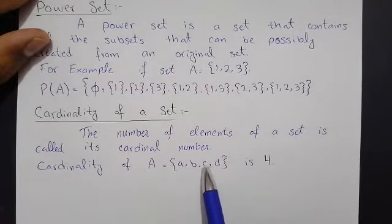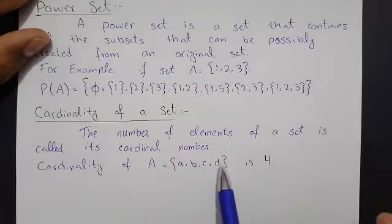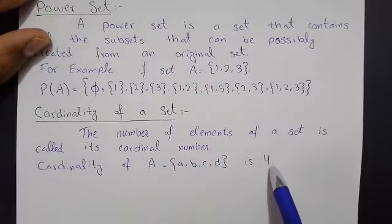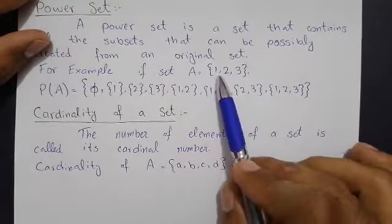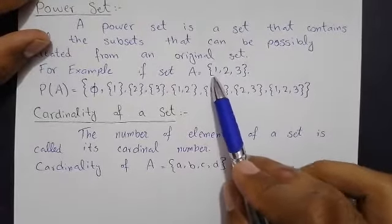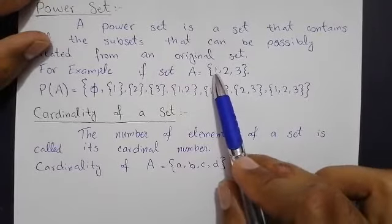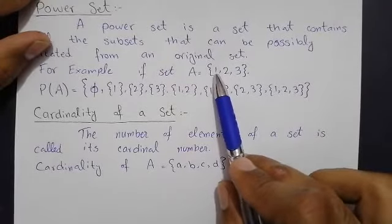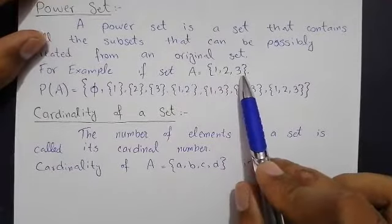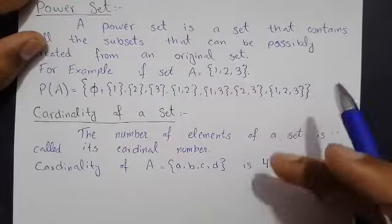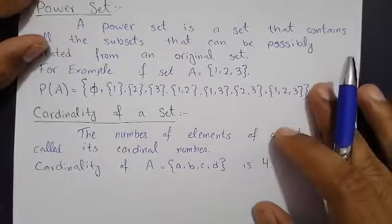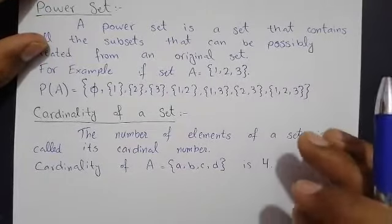1, 2, 3, 4 elements ہیں تو اس کی Cardinality 4 ہوگی۔ اور ایک اور set کی Cardinality 3 ہوگی کیونکہ elements کتنے ہیں — 3 ہیں۔ تو یہ Cardinality ہوتی ہے۔ Definitions اتنی ہیں۔